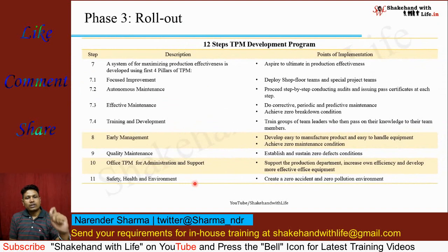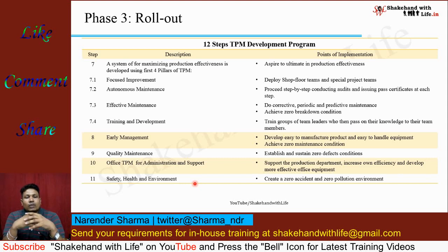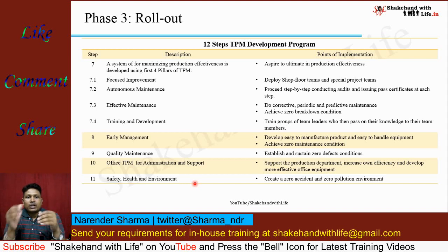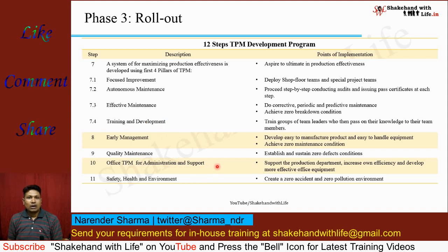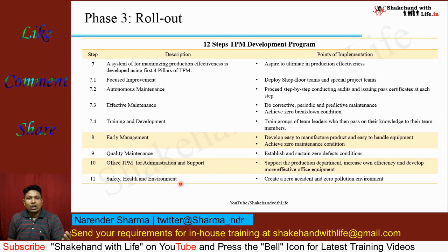The third phase is the rollout phase. In this phase, the organization actually rolls out the TPM program with the help of the eight pillars of TPM. The eight pillars are: focused improvement, autonomous maintenance, effective maintenance, training and development, early management, quality maintenance, office TPM for administration and support, and safety, health and environment. With the help of these eight pillars, the TPM development program can be rolled out in a factory.